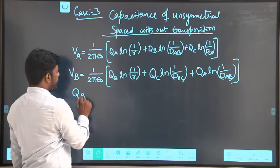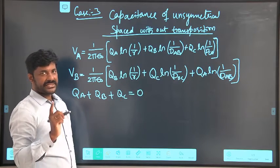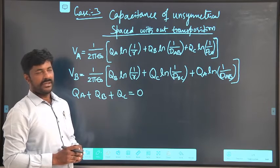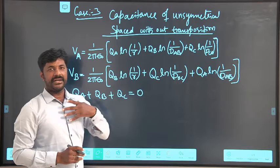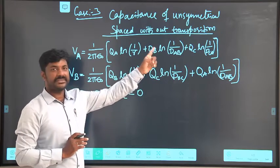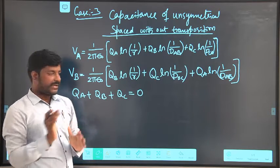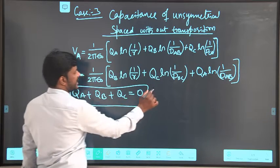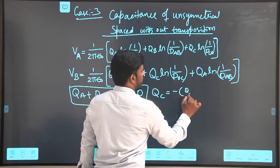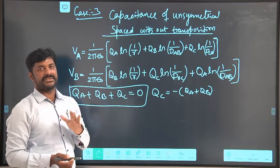From here our actual derivation starts. What we need to do is first minimize the terms. There are three terms: A, B, C. Finally I want the answer only in terms of A, meaning I have to eliminate the B and C terms. In the first step I am going to reduce the C term — that is, I am eliminating QC using the balanced system condition: QC = −(QA + QB). Then in these two equations you will have only two terms, QA and QB; QC will be removed.